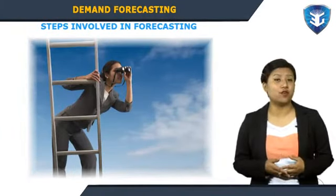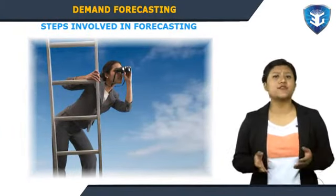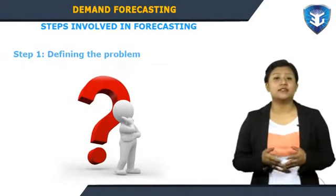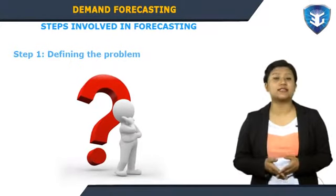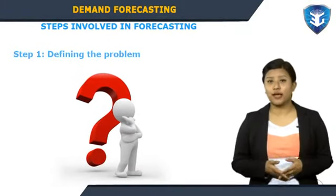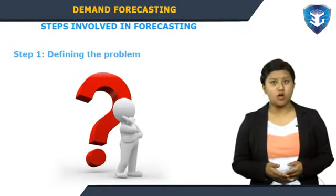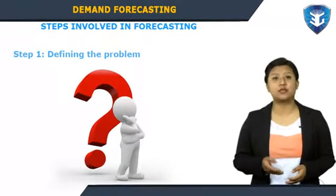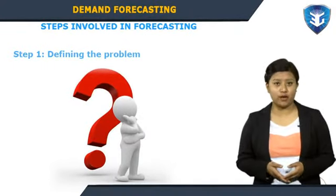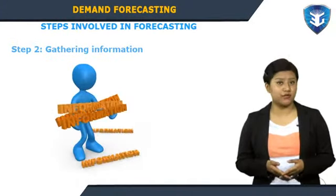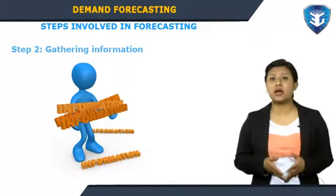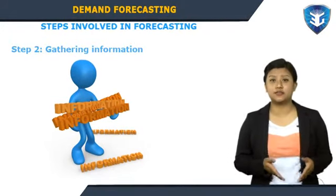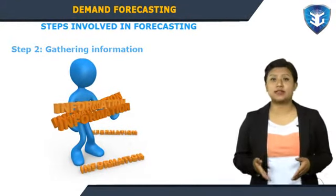There are usually five basic steps in any forecasting task. Step one: defining the problem carefully requires an understanding of how the forecast will be used, who requires the forecast, and how the forecasting function fits within the organization. Step two: gathering information — there are always at least two kinds of information required: statistical data and the accumulated expertise of the people who collect the data and use the forecast.